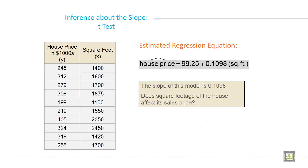Here you have an example. Here estimated regression equation will be house price equals 98.25 plus this much per square feet. The slope of this model is 0.1098. Does the square footage of the house affect its sale price? This is the question.